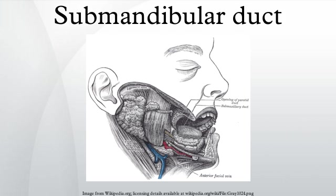Structure: It begins by numerous branches from the deep surface of the gland, and runs forward between the mylohyoideus, hyoglossus, and genioglossus, then between the sublingual gland and the genioglossus, and opens by a narrow orifice on the summit of a small papilla at the side of the frenulum linguae. It lies superior to the lingual and hypoglossal nerves.